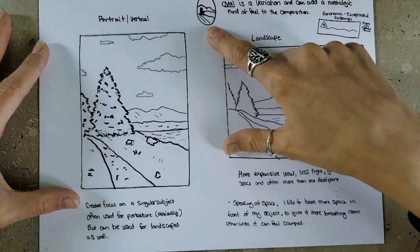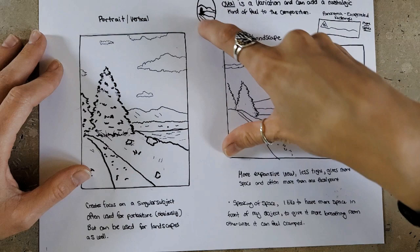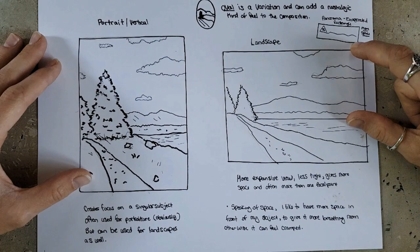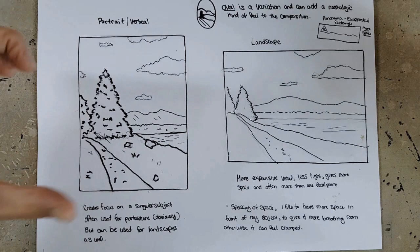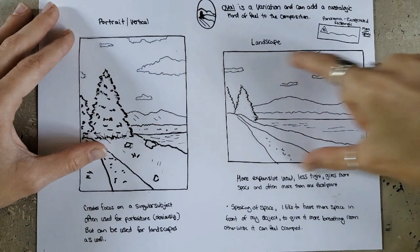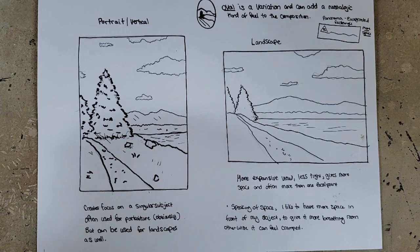To me it feels very nostalgic — I think it's because I grew up in the 90s and this oval shape was very popular in the 70s, 80s, and 90s. If you really want a lot of space, another variation is a panorama, where your length is about two to three times as long as your height. You can also use it the other way if you want emphasis in the top part of the canvas, but I generally use panorama in a horizontal view. Here you can see a panoramic acrylic painting I did — you can see how much space it really gives a landscape.